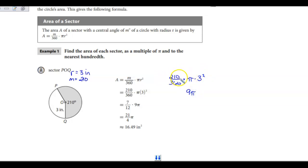I can simplify my fraction here by dividing both by 30, so I get 7 over 12. If I take 7 twelfths times 9, I can cross-simplify, divide both by 3, and I get 21 over 4.